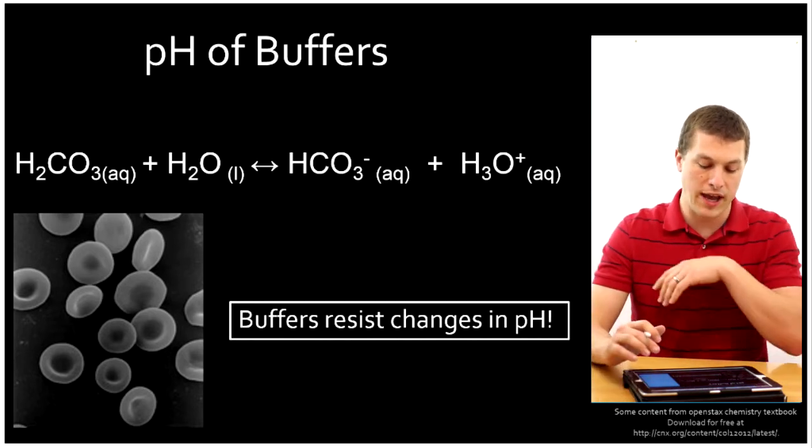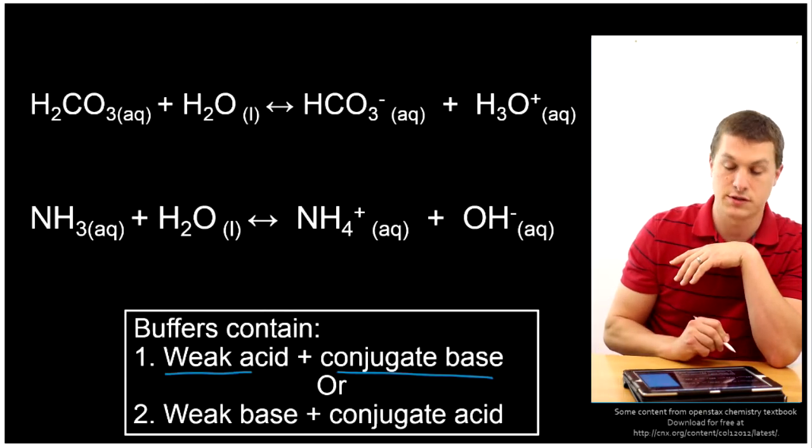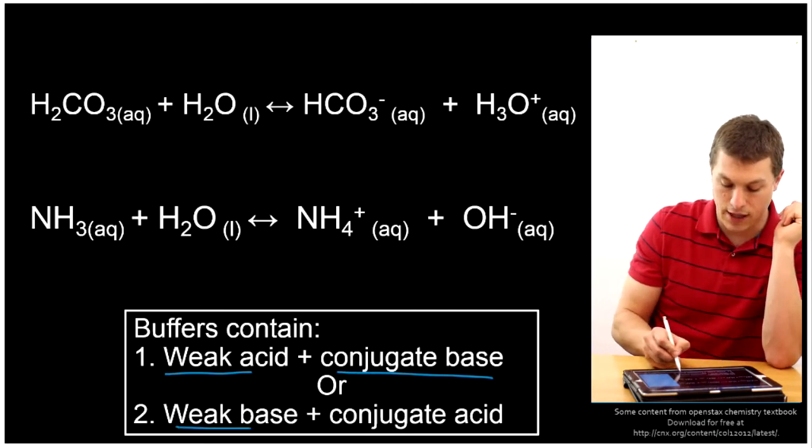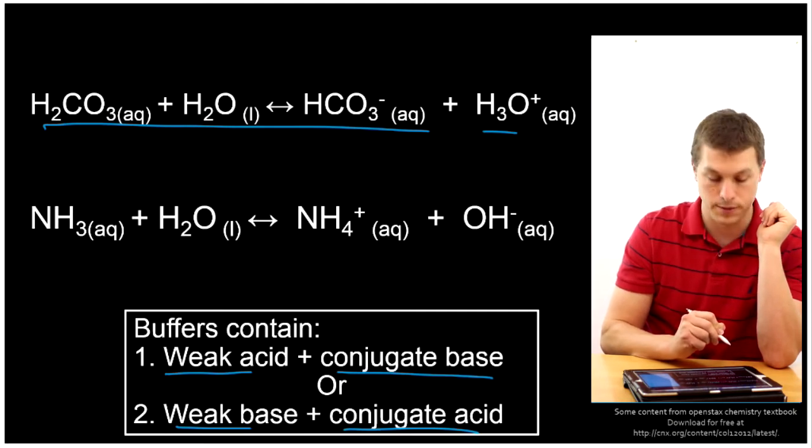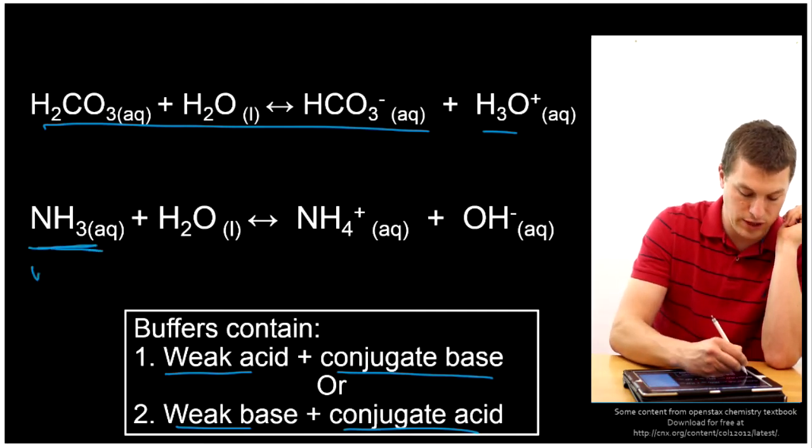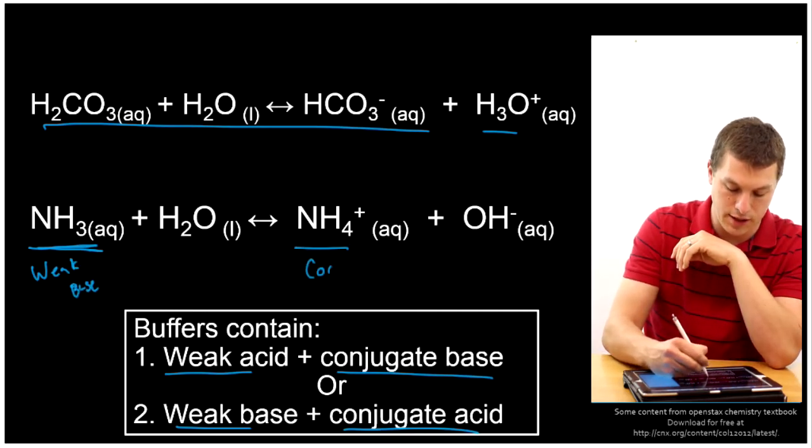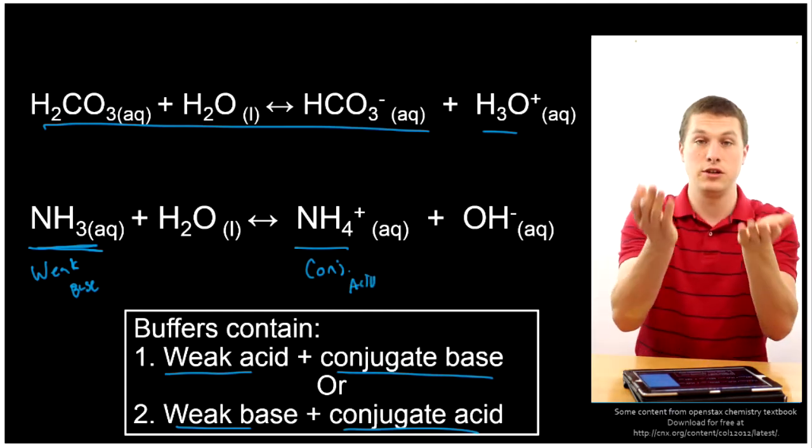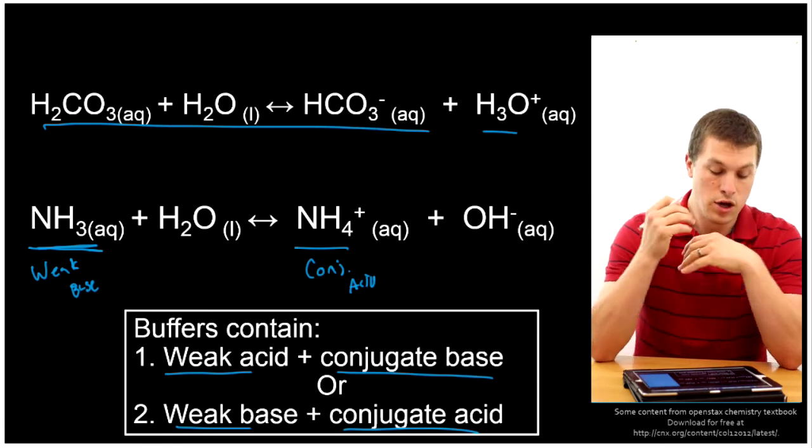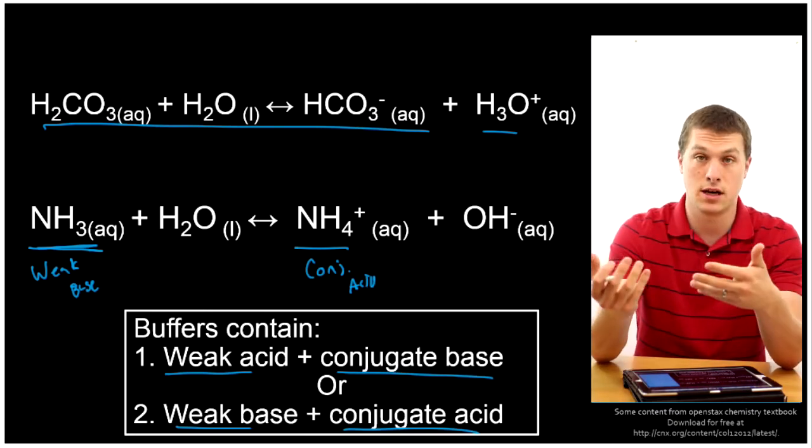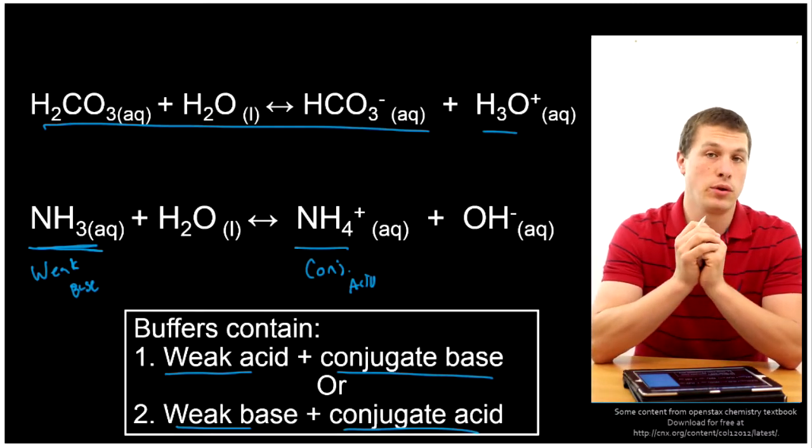And that means there's actually two ways to make a buffer. One is we can have a weak acid and its conjugate base like we just saw. On the other hand, you could have a weak base and a conjugate acid. So this top reaction is an example of the weak acid conjugate base buffer. The bottom reaction has a base here, this guy's a weak base. And we can look at its conjugate acid over here. And we once again have this equilibrium between an acid and a base that gives us a buffer. So two ways to make a buffer. We need a significant amount of weak acid and its conjugate base or a significant amount of weak base and its conjugate acid. Once we have both of those, we have a buffer.